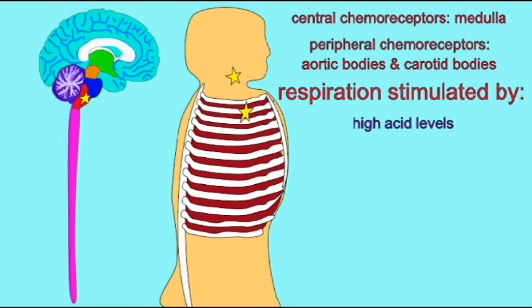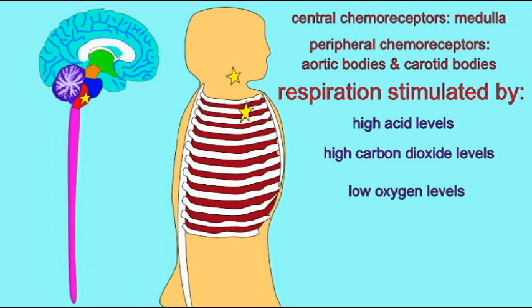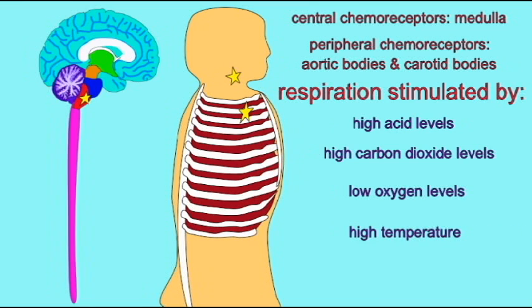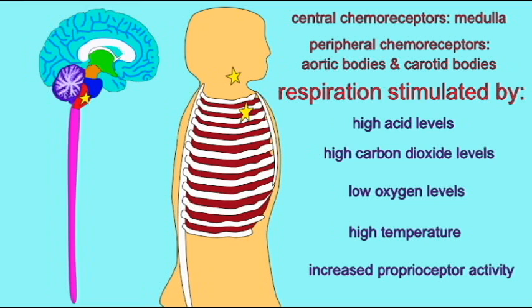The rate and depth of respiration will increase when the amount of acid in the blood goes up, when the amount of carbon dioxide increases, when the amount of oxygen in the blood decreases, when the temperature is increased, or when proprioceptor activity increases. All of these stimuli can increase the rate of respiration.